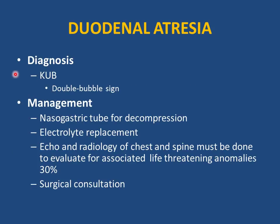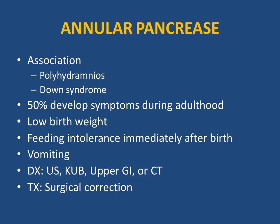Diagnosis of duodenal atresia: KUB shows the classic double bubble sign with absence of gas distal to the obstruction. Management includes nasogastric tube for decompression, electrolyte replacement for persistent vomiting, echocardiogram and spine radiograph to evaluate for other associated life-threatening anomalies, and surgical consultation for correction.